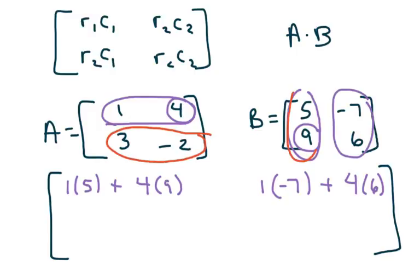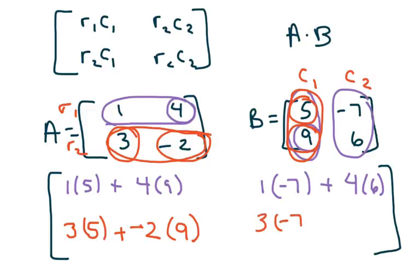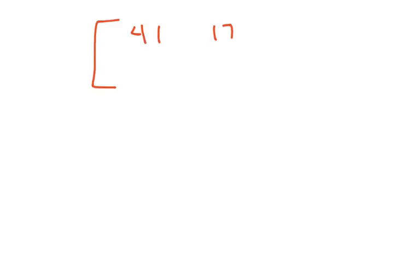Now we take row 2 times column 1, doing the elements: 3 times 5, plus negative 2 times 9. Then row 2 times column 2: 3 times negative 7, plus negative 2 times 6. When you simplify all of this you will get 41, 17, negative 3, and negative 33.